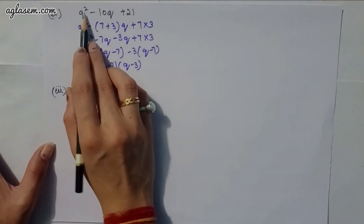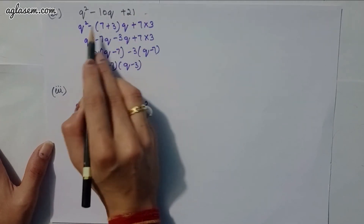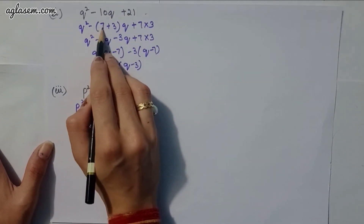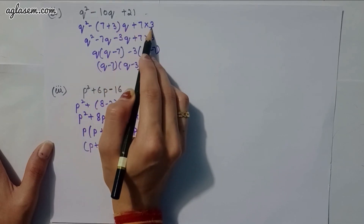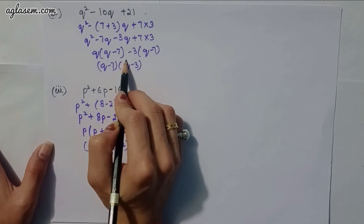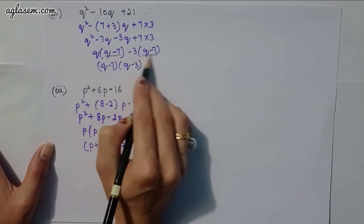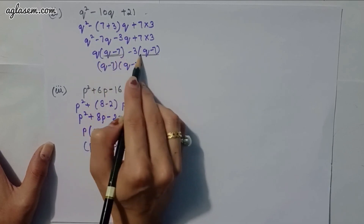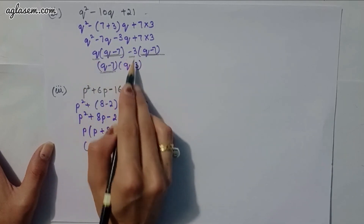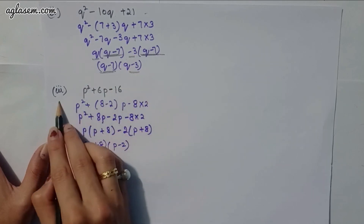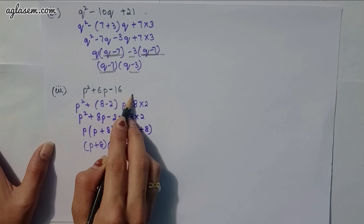Second part: q² − 10q + 21. Split: q² − 7q − 3q + 21 = q(q − 7) − 3(q − 7) = (q − 7)(q − 3).